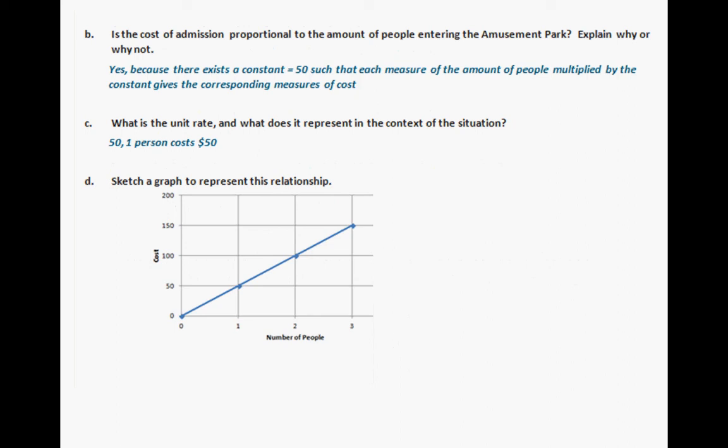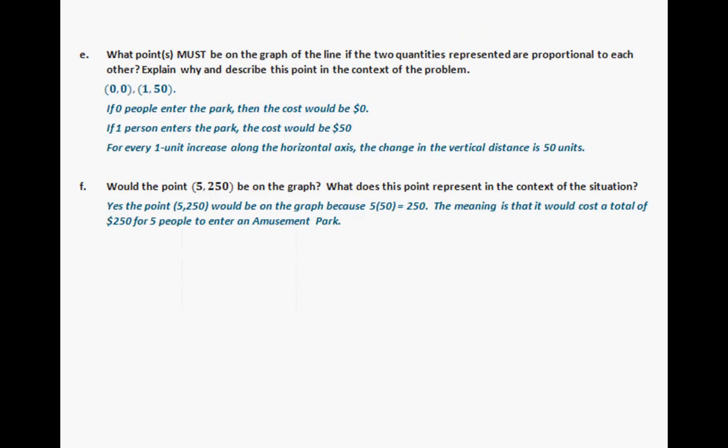For the last set of questions about whether cost is proportional, practice your explanations — they need to reference the constant of 50 and what it means. For C and D, sketch a graph to represent the relationship. What points must be on the graph? The origin 0 comma 0, and the unit rate point 1 comma 50. Explain what each means. Also identify the point 5 comma 250 and use the equation to justify that answer of 250.